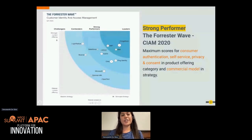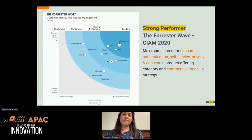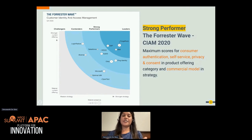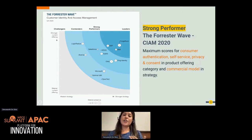This is a recent Forrester Wave report from the latter half of 2020 — the first time we participated in the Forrester Wave report in the CIAM space. We were able to get into the strong performer section on our first participation, very near to the leaders section, with maximum scores for consumer authentication, self-service, and privacy and consent management, as well as for our commercial model.